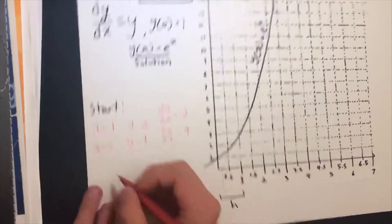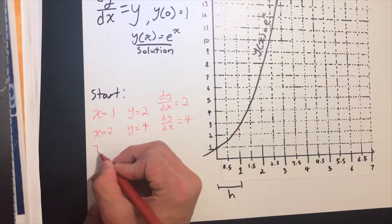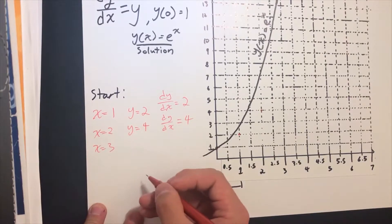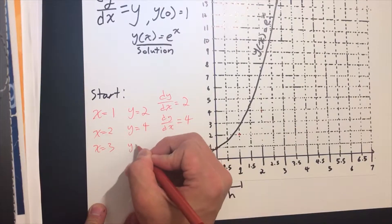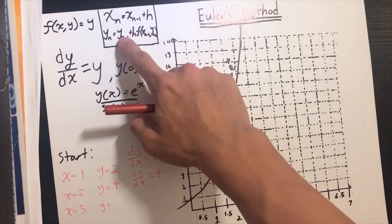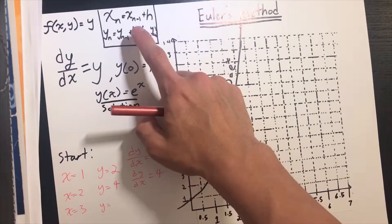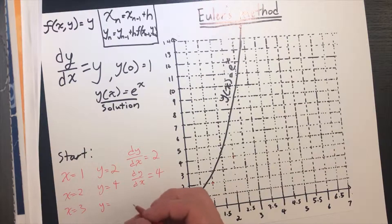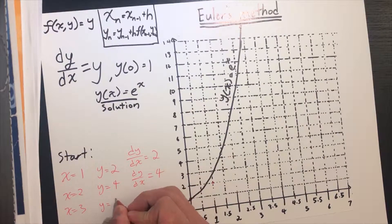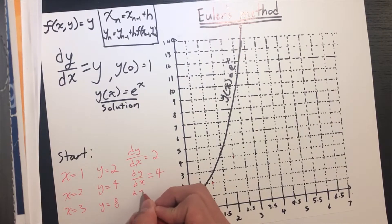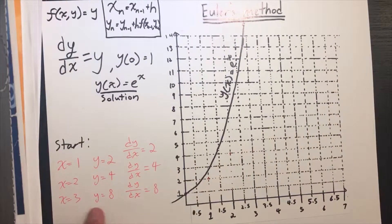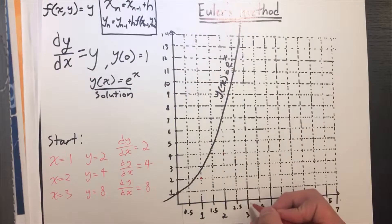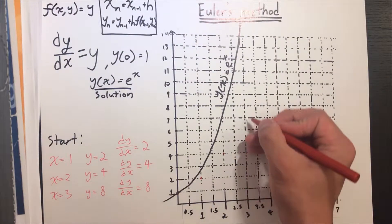Let's do one more. The next point is x = 3, which makes y = 4 + 1×4 = 8. The slope becomes 8, and our next point is (3, 8).